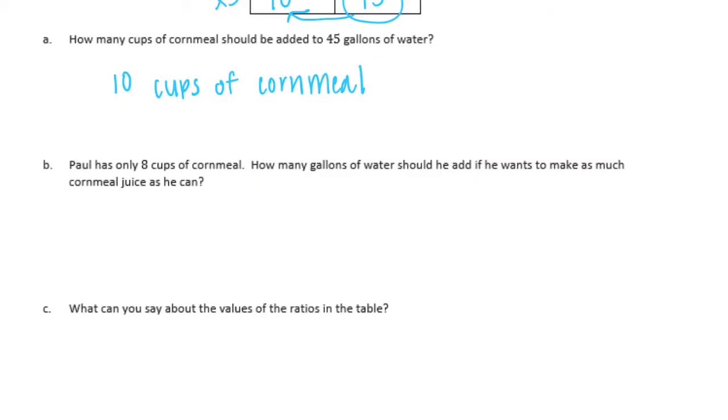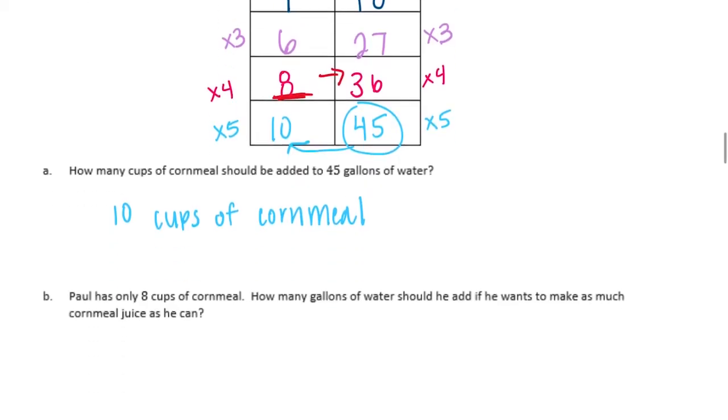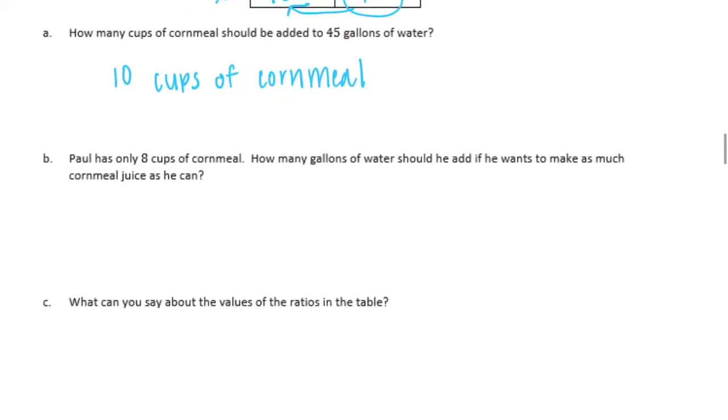B, Paul has only 8 cups of cornmeal. How many gallons of water should he add if he wants to make as much cornmeal juice as he can? So he has 8 cups of cornmeal. Let's look for that. So here is the cups of cornmeal and here's 8. So for 8 cups of cornmeal he needs 36 gallons of water. So we would say that Paul needs 36 gallons of water.